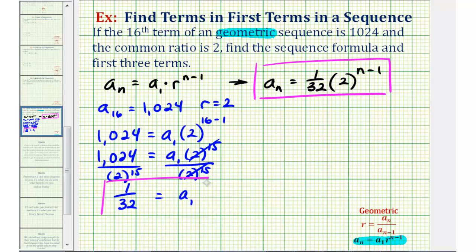Here's the first term, but we're also asked to find the next two terms. So we could use a sub one and multiply by the common ratio to find the second and third term, but let's go ahead and practice using our formula.